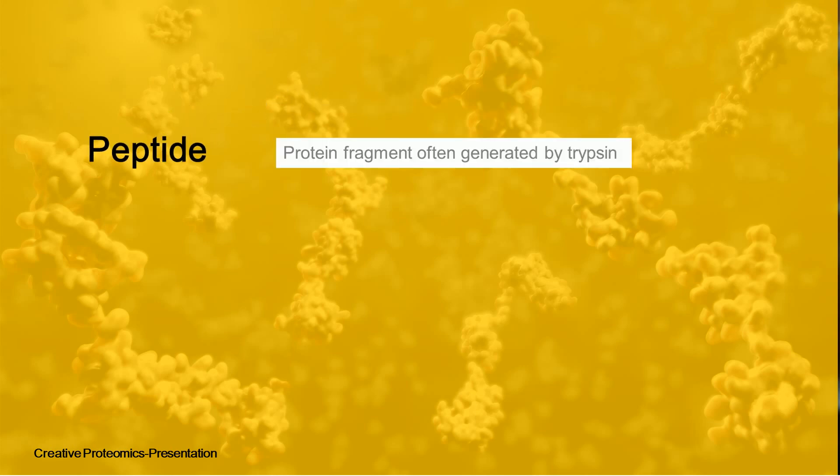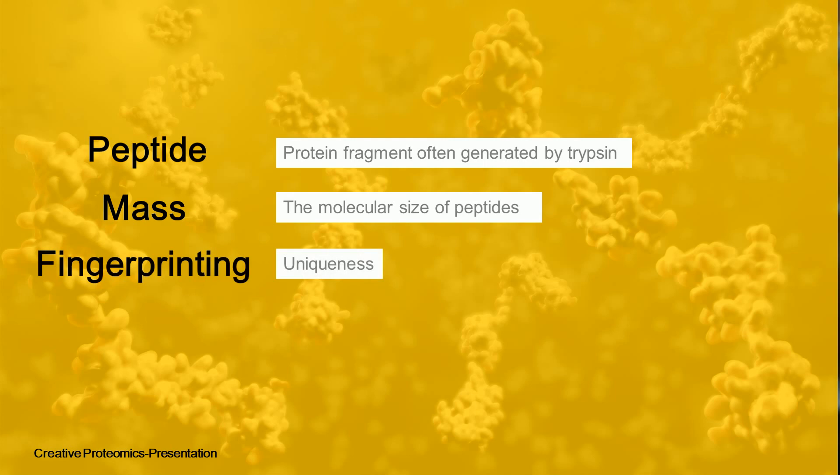Mass means the molecular size of peptides, and fingerprinting represents the uniqueness of the masses of peptides. It means that the digestion of a protein by an enzyme can provide a specific fingerprint of great specificity.